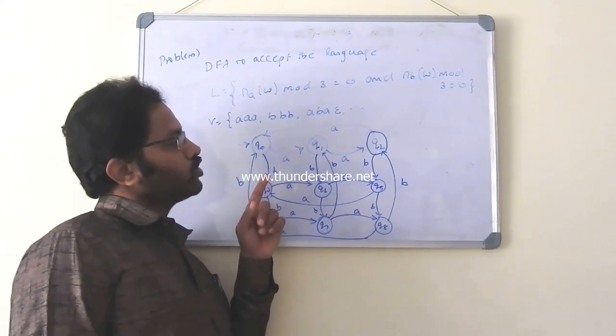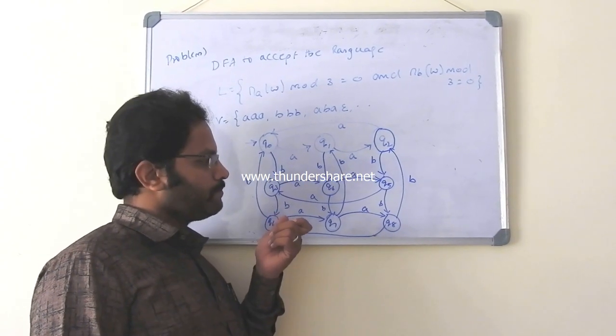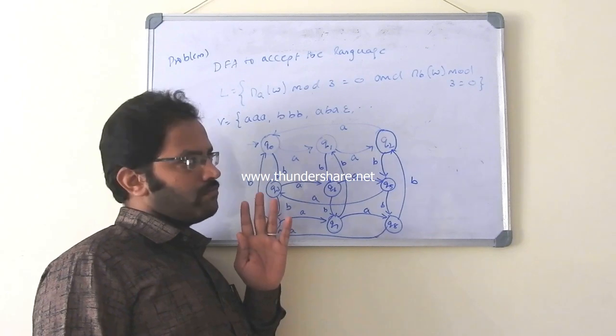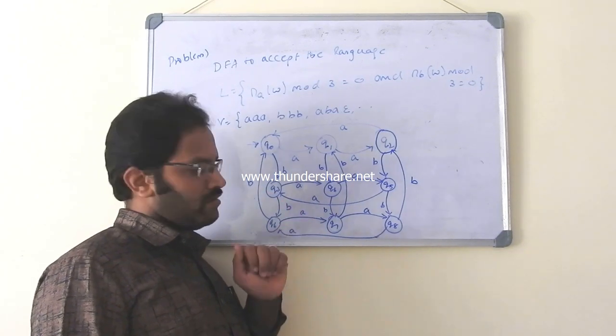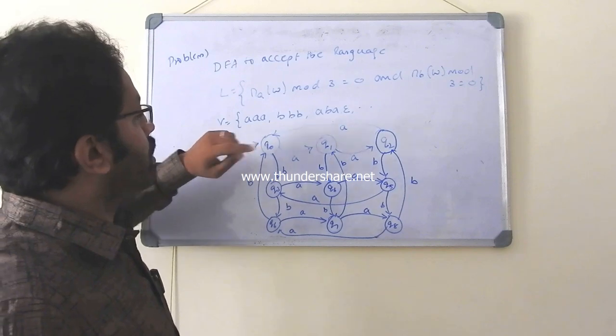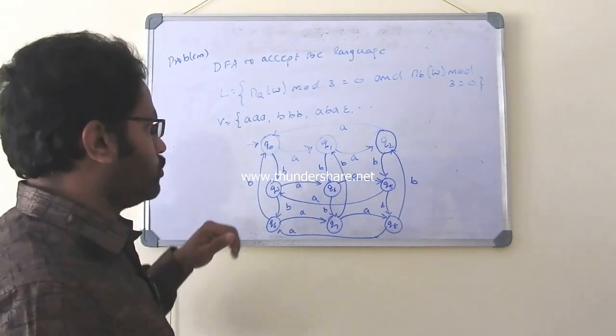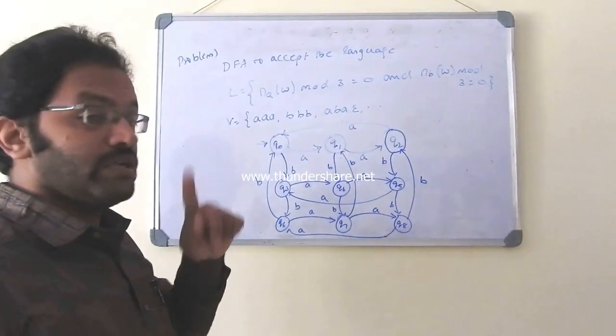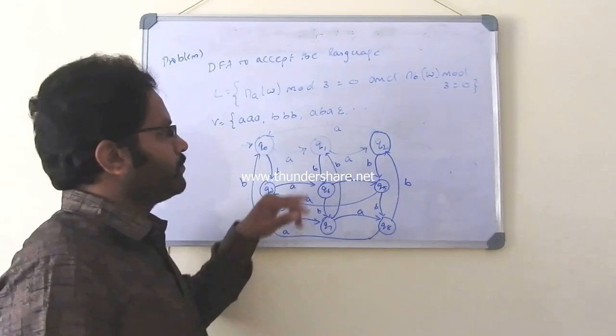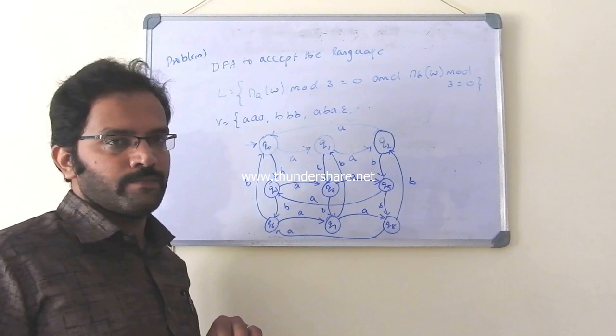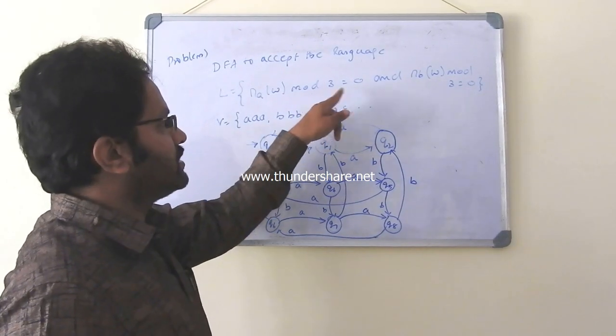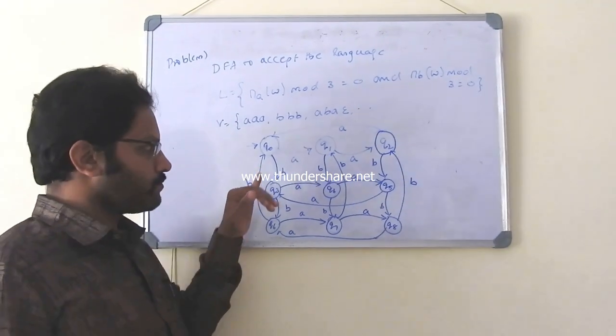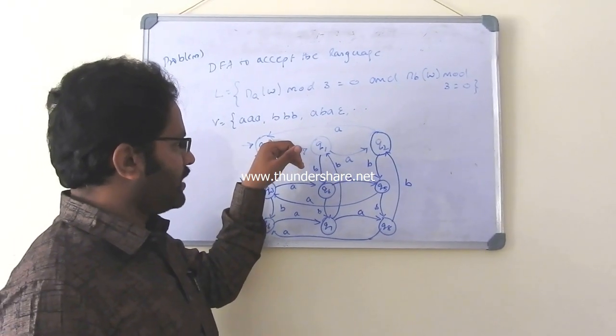Then we are talking about or writing a problem or solving a problem on number of A's and number of B's mod 3 equal to 0. So we are talking about 0. So I told, check for the mod 3 and 3. So we will have 9 states. Then since I have 3 cross 3 and 3, I have a 3 cross 3 matrix like structure.